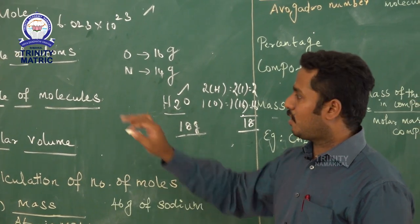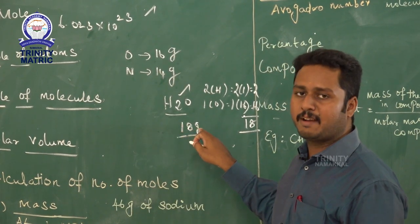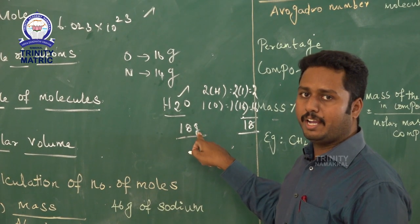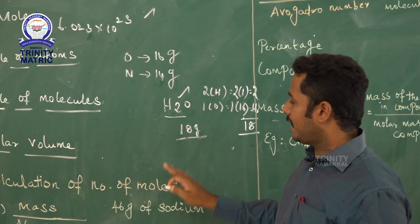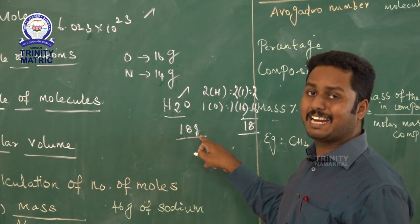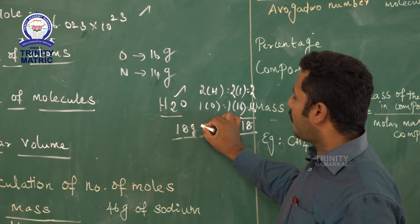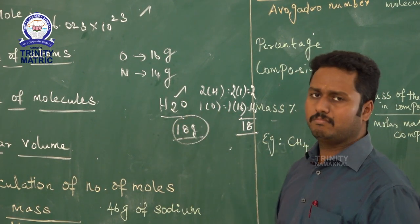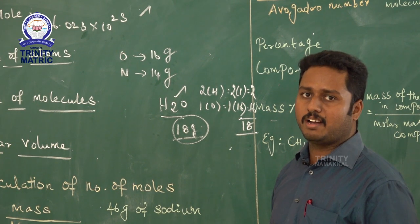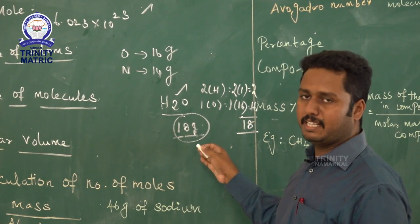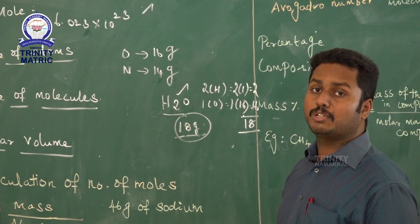If the atomic mass is expressed in grams, it is gram atomic mass. If the molecular mass is expressed in grams, it is gram molecular mass. So the gram atomic mass equals 1 mole, and the gram molecular mass also equals 1 mole. For example, 1 mole of water equals 18 grams. Therefore, 2 moles of water equals 36 grams.